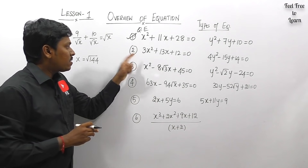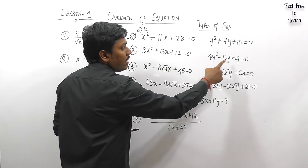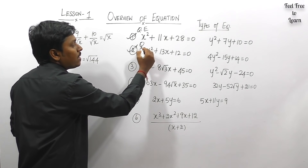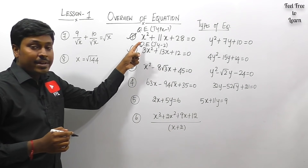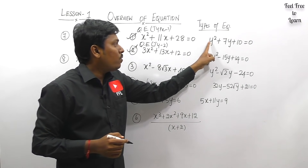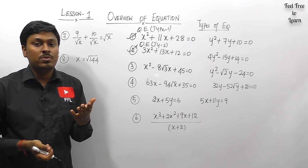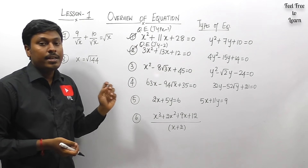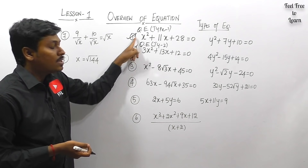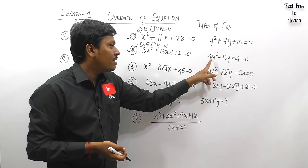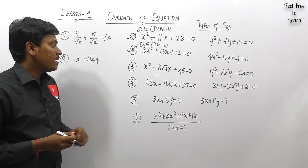Question number two also has x² + x + constant and y² + y + constant, so it is also a quadratic equation — but it is Type 2. Question one is Type 1 because there is no constant before x² or y². Question two is Type 2 because there is a constant before x². In lesson three we will solve eight different questions on Type 2 quadratic equations. Both are quadratic, but there is a difference between Type 1 and Type 2.